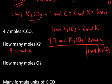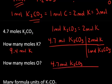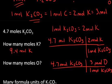How many moles of oxygen? You're given 4.7 moles of the sample. We set up a similar per expression. For every one mole of potassium carbonate, we have three moles of oxygen. So it's 4.7 times 3, which equals 14.1. But with only two sig figs, that's 14 moles of oxygen.